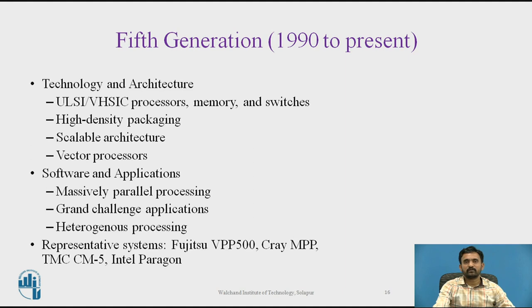In the fifth generation, from 1990 to the present, in the mid to late 1980s designers started using a technique known as instruction pipelining — the idea is to break programs into small instructions and process them in different stages of completion. For example, the processor retrieves operands for the next instruction while calculating the result of the current one. Later, superscalar processors were designed to execute multiple instructions in parallel, using multiple execution units like separate arithmetic and logic units.